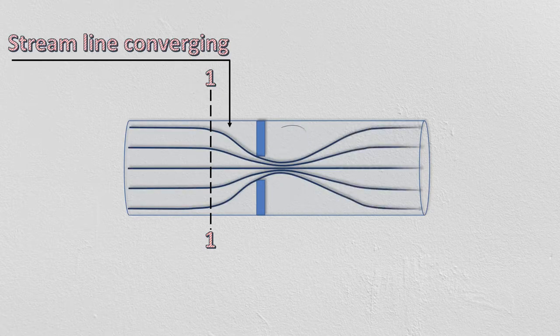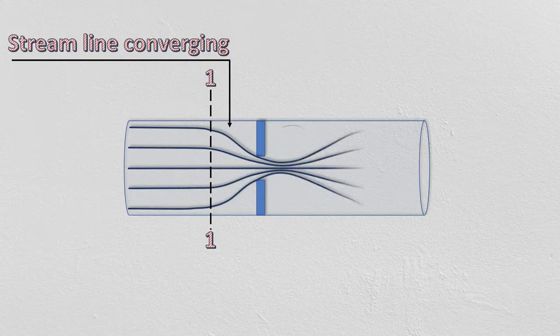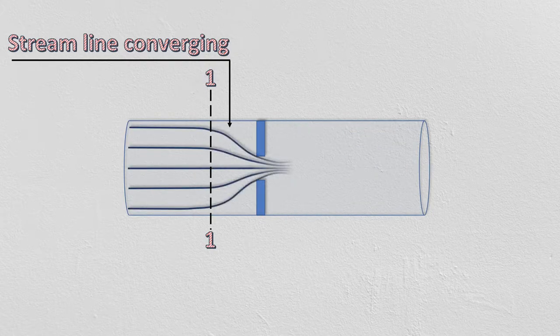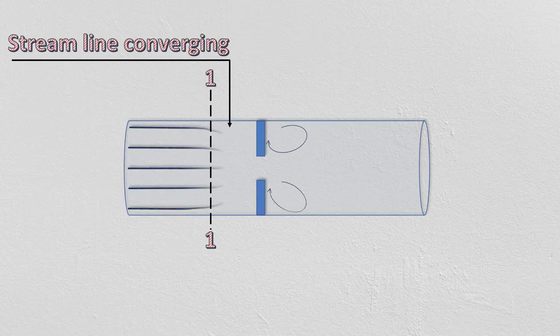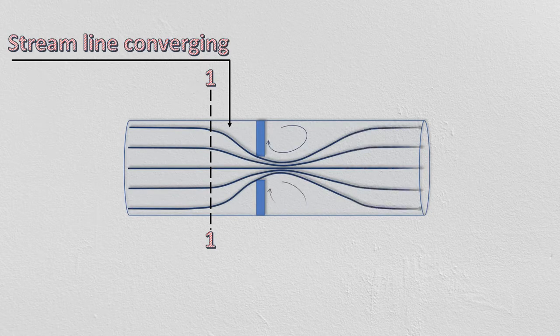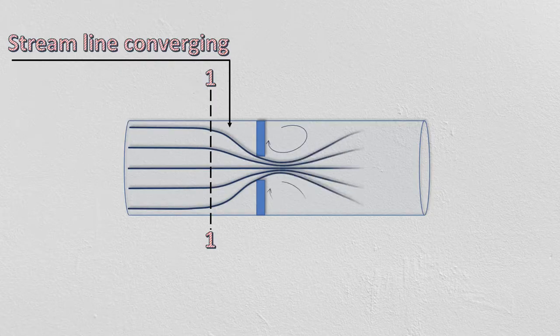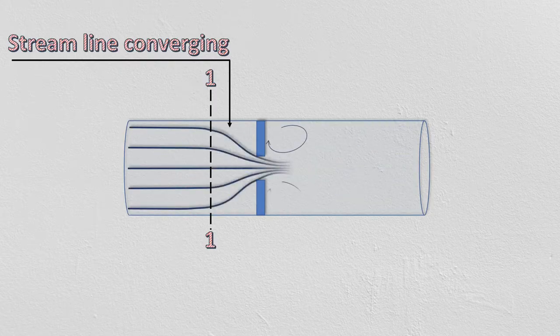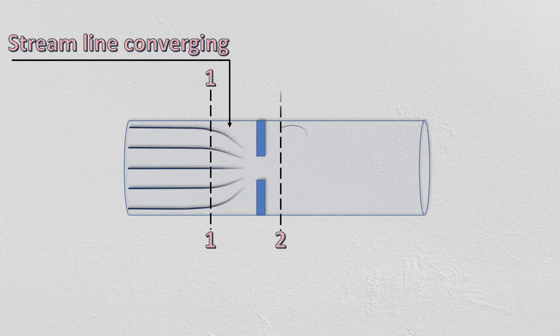Due to reduction in area, the fluid stream continuously accelerates beyond the orifice plate until a point where the area of fluid stream reduces to a minimum value. This minimum area at section 2 is known as vena contracta.